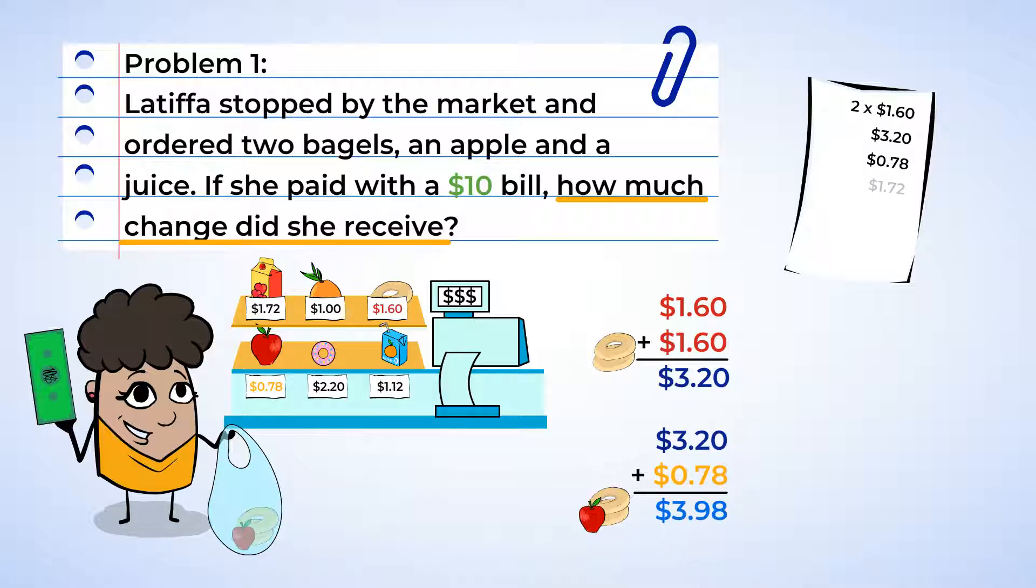Next, she bought a juice for $1.72. So, $3.98 plus $1.72 is equal to $5.70.